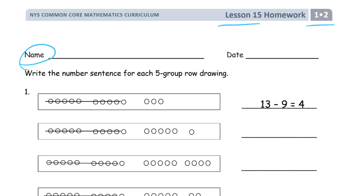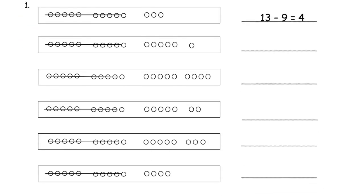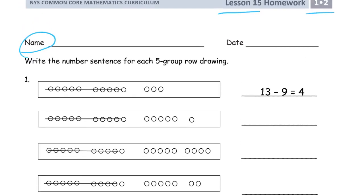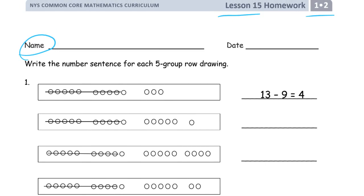These are all subtraction because there are parts that are crossed out. These are five group rows, which means we have two fives — that's 10 — and there's another five and one more, that's six. So 10 and 6 is 16. So 16 is the whole.